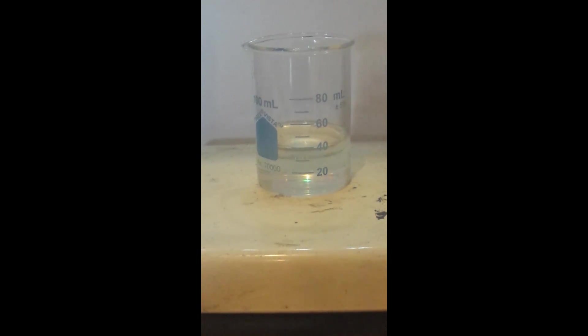In this beaker, I have about 40 milliliters of benzene, to which I'm going to add a small amount of potassium permanganate.